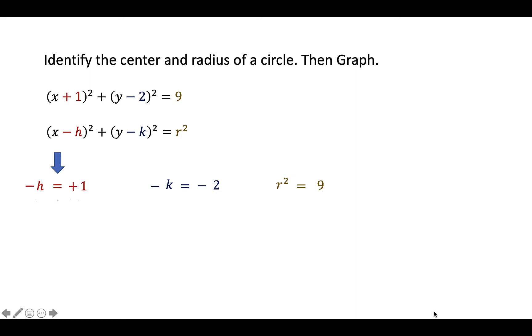Like -h = +1. So divide both sides by negative, so you get h = -1.